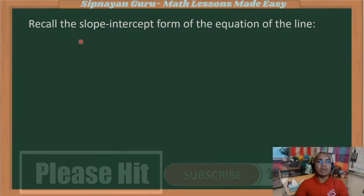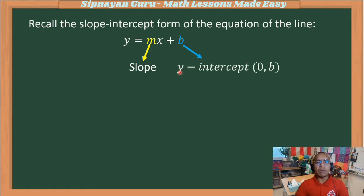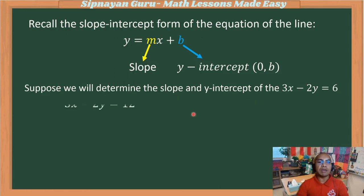Let us recall our lesson about the slope-intercept form of the equation of the line: y equals mx plus b, in which the slope is the coefficient of x and the constant is the y-intercept. Let us review how to find the slope and the y-intercept of the equation of the line given in standard form.